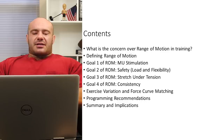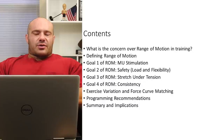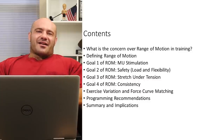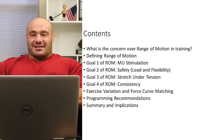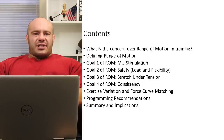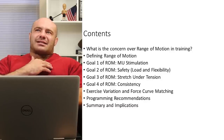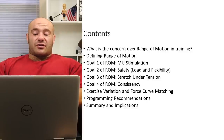Let's take a look at the contents. First up: what is the concern of range of motion in training — what's up for grabs and what we're discussing. Why do we care? Number two, as you've probably become accustomed to in this series, is defining range of motion. We always have to define our terms — probably 50% of online debates are erroneous because people don't reach consensus on definitions and spend a lot of time going in circles. Then there are four specific goals we want to achieve with range of motion, followed by exercise variation and force curve matching, and finally programmer recommendations and summary implications.